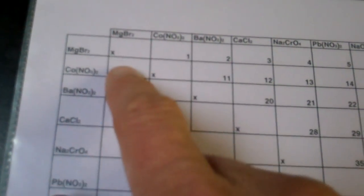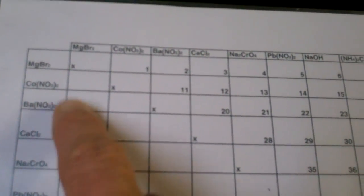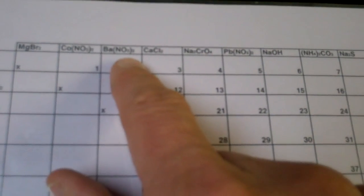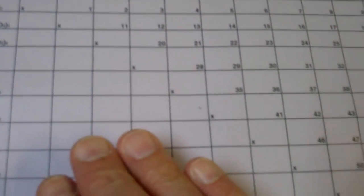For instance, this is cobalt nitrate and magnesium bromide, which we'll do right here, so there's no need to do it again. This is barium nitrate and magnesium bromide, which we would do right here in square number two. Now, these blanks are available to you to do the experiment over again if you're not satisfied with your results up above.